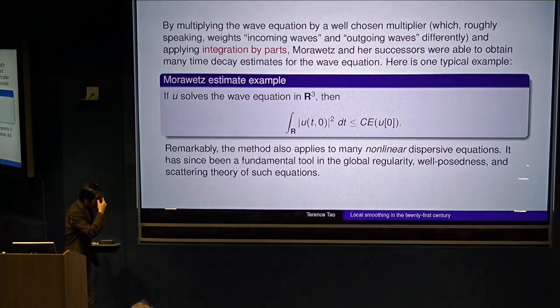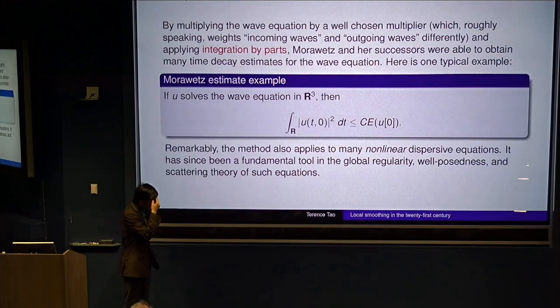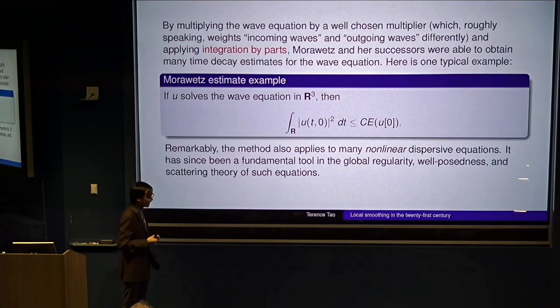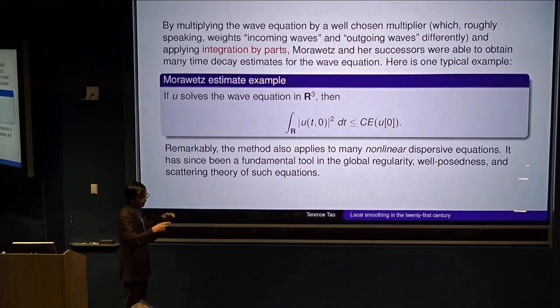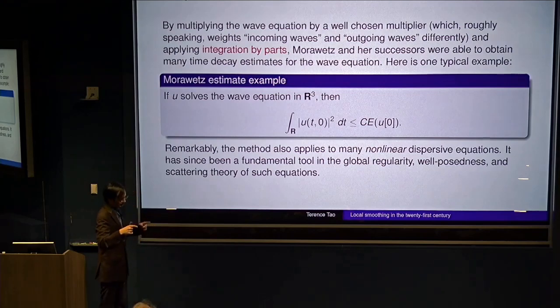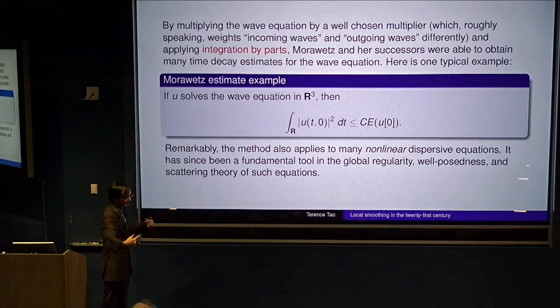So basically what Morawetz did was she modified energy conservation. So energy is conserved. She looked at modified energies where she treats incoming waves and outgoing waves differently. So she multiplies the solution by a certain multiplier to favor